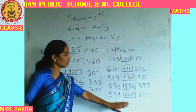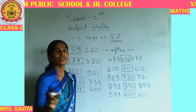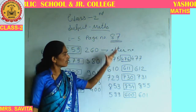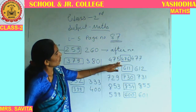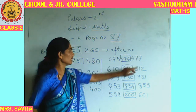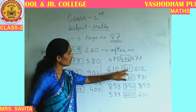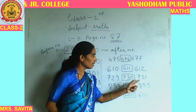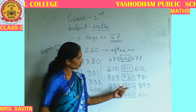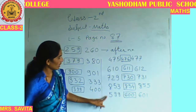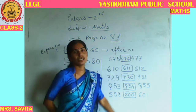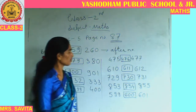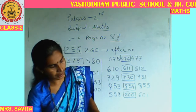Let's check. We have to check all answers. 611, 612 — correct. 729, 730, 731 — correct. 853, 854, 855 — right. 599, 600, 601 — 100%. It means your answers are correct. So the first and second exercises are completed.